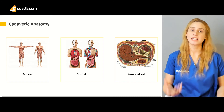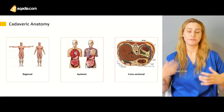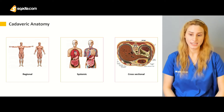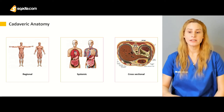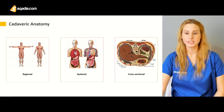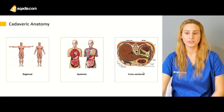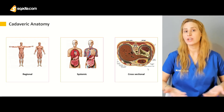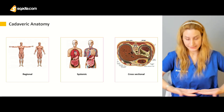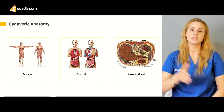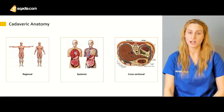Cross-sectional anatomy is like taking a transverse plane through the body — for example, a cross-section of the abdomen where you can see the thoracic vertebrae, the diaphragm, the dome of the diaphragm, the pleural cavity, and the falciform ligament of the liver. Whenever you're studying anatomy, you need to do regional anatomy, systemic anatomy, and cross-sectional anatomy.